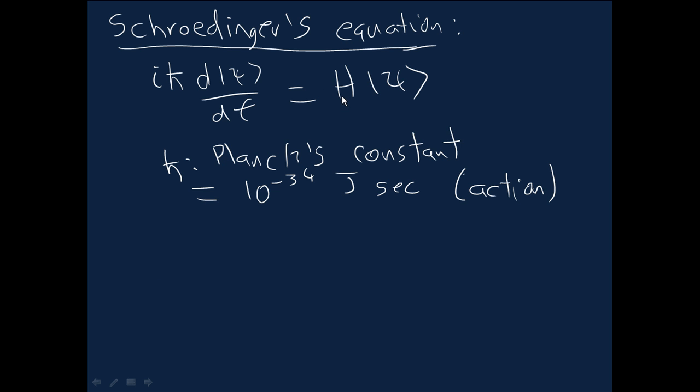So H here is—it's not the Hadamard gate. It's instead what's called the Hamiltonian. And what's important about the Hamiltonian, it's a Hermitian matrix acting on the state of the quantum system. So Hermitian matrix, meaning that the adjoint of H returns H to us again. And so it's just some particular Hermitian matrix whose value determines how the state psi changes in time through this equation, through Schrödinger's equation.